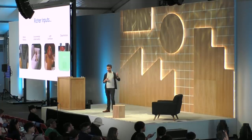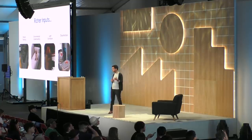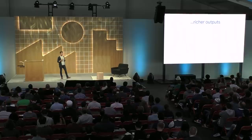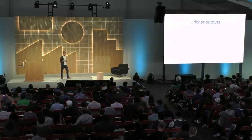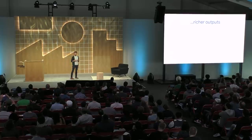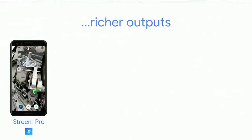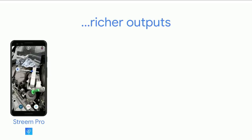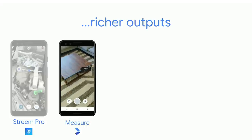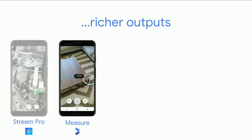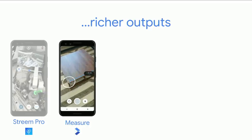In AR terms, this means things like six-degrees-of-freedom tracking, plane finding, light estimation, or super precise shared localization. And once you give a computer these richer inputs, you can produce really powerful new outputs. You can do what Stream is doing and overlay a how-to video about how to change the oil in your car directly above the place where the oil goes. You can call in a remote expert to help you find specific parts of the engine right in front of you. Or you can turn a smartphone into the world's quickest and easiest tape measure — one that's always with you and doesn't get lost in your junk drawer.